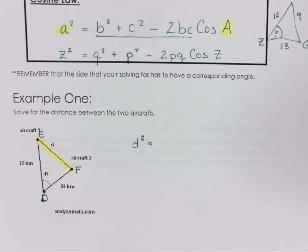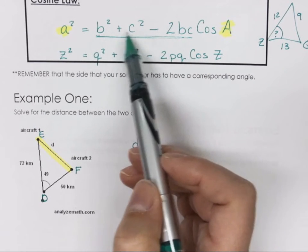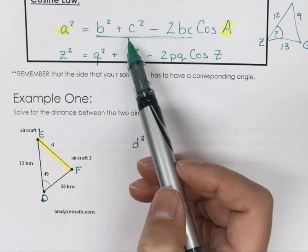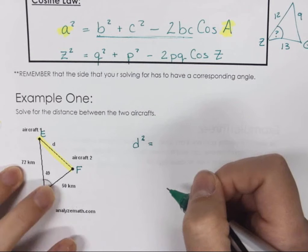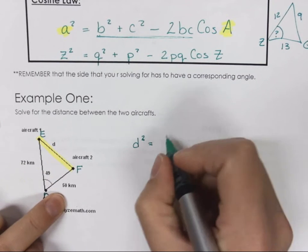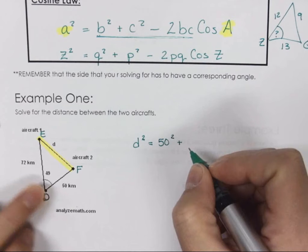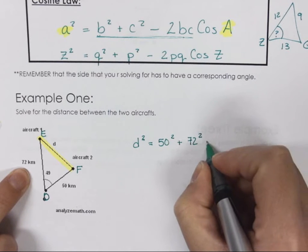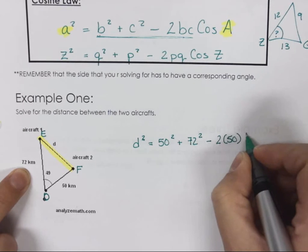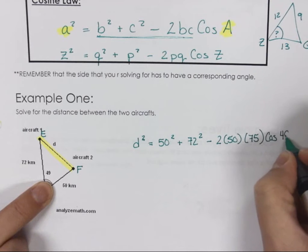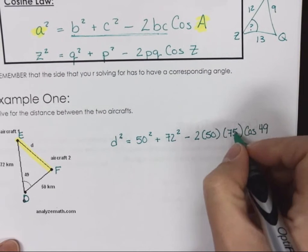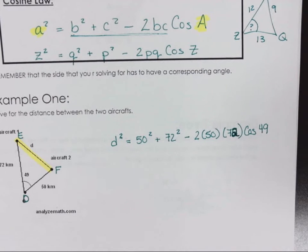We're going to have D squared equals side length. It doesn't matter if E or F comes first because they're added. Let's go in order. E would be 50 squared plus F, which would be 72 squared minus 2 times 50 times 72 times cos of 49.